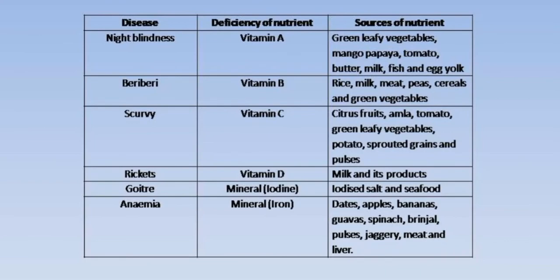Next is scurvy. Scurvy is caused when there is a deficiency of Vitamin C. To prevent scurvy, we should consume citrus fruits, amla, tomato, green leafy vegetables, potatoes, sprouted grains, and pulses.